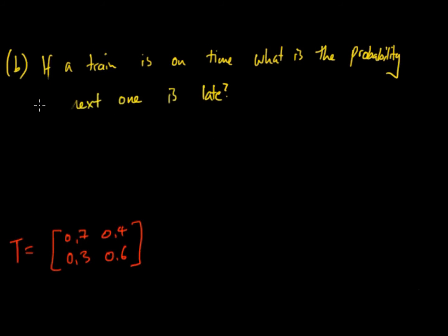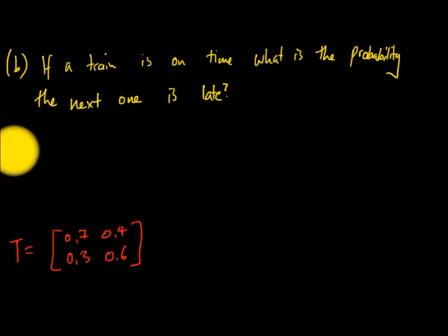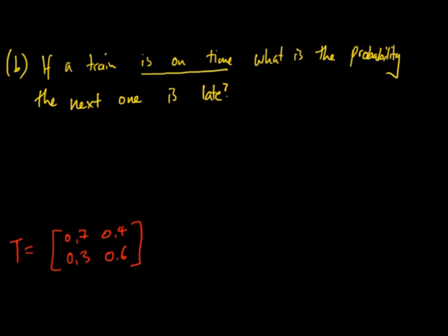The next part of the question is: if a train is on time, what is the probability that the next one is late? This is continuing from the same question so we keep the same transition matrix. If a train is on time, we need to identify the initial condition.